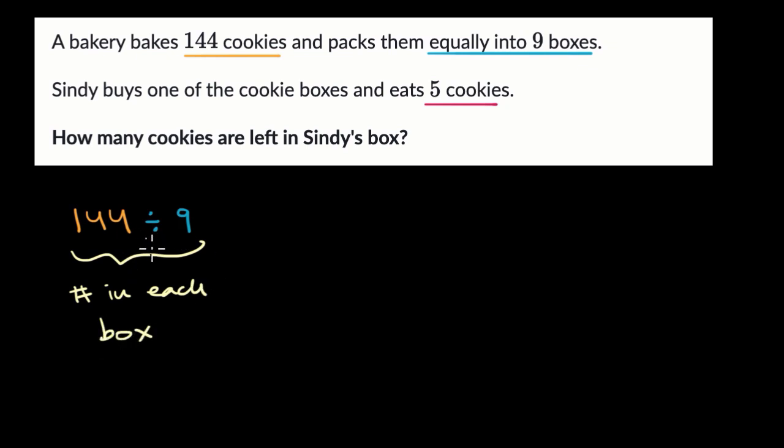So we'd want to do that first, and once we figure out the number in each box, that would also be the amount that Cindy gets when she buys one of the boxes, and then she eats five cookies. So we'd subtract five from that, and we would know how many cookies are left in Cindy's box.